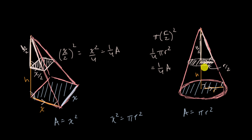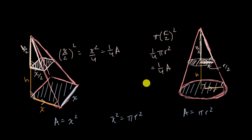You're going to have two similar triangles, and you're going to see the same cross-sectional areas at any point along the height. Therefore, by Cavalieri's principle in three dimensions, these two figures have the same volume.